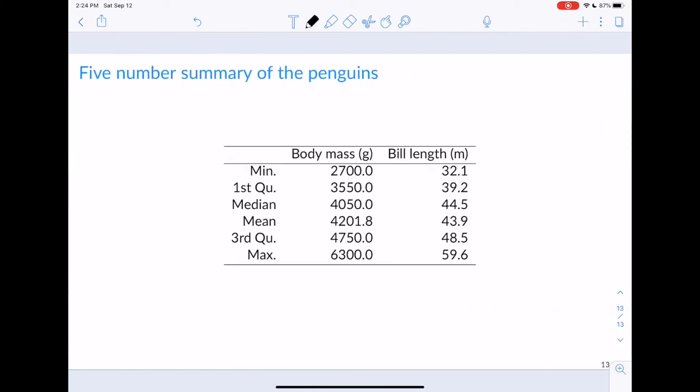So, let's see some five-number summaries, and this is again across all the penguins. Here, we've got the body mass, and in the second column, we've got the bill length. So, we can see the minimum value for the body mass is 2,700. The first quartile is 3,550. The median is 4,050. The mean is 4,201.8. The third quartile is 4,750, and the maximum is 6,300.